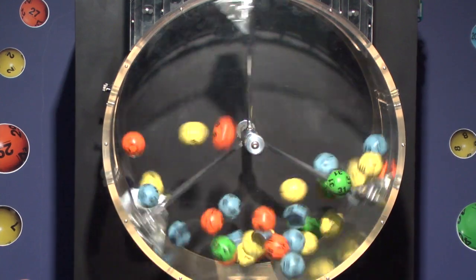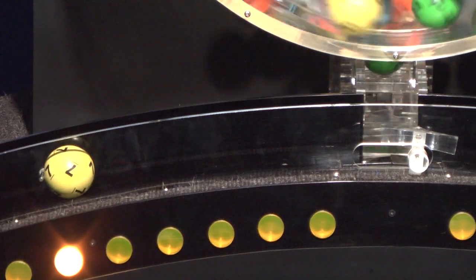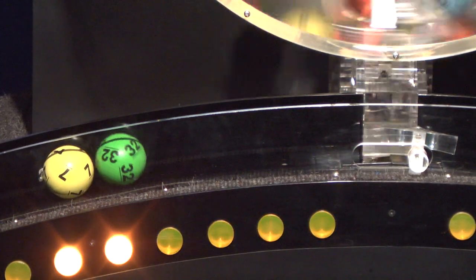But first, let's see how you did in tonight's MassCash drawing. First number up is number seven. After that we have number 32.